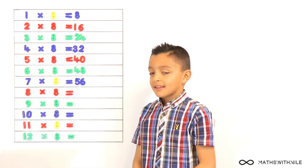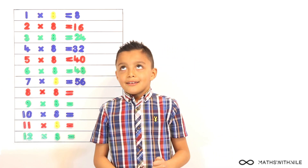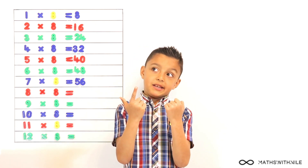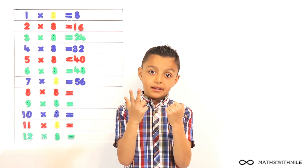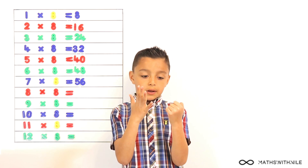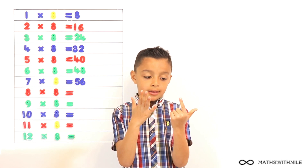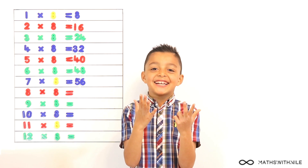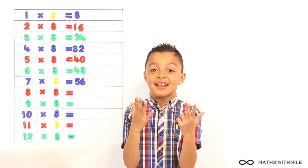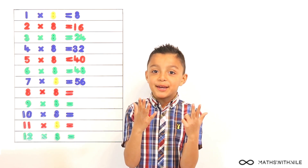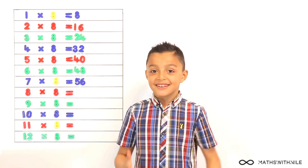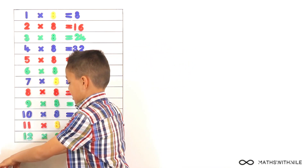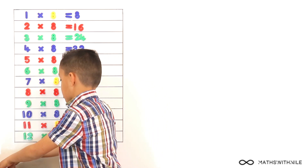And what about 8 times 8? 56. 57, 58, 59, 60, 61, 62, 63, 64. That was a big yawn! 64. So 8 times 8 equals 64.